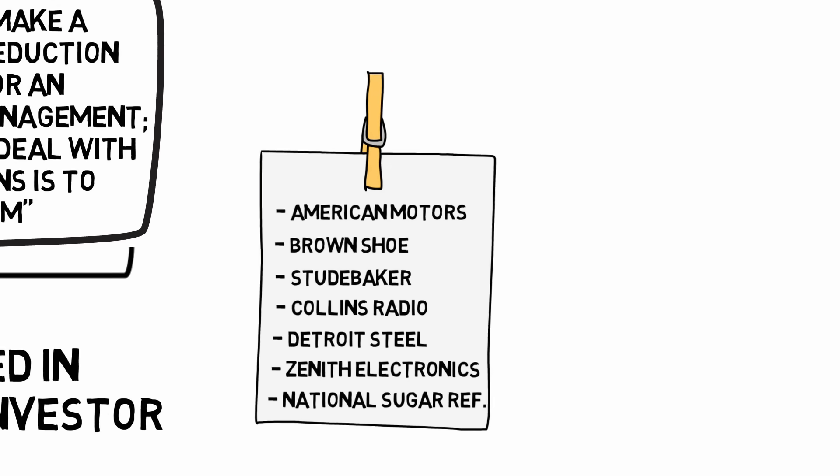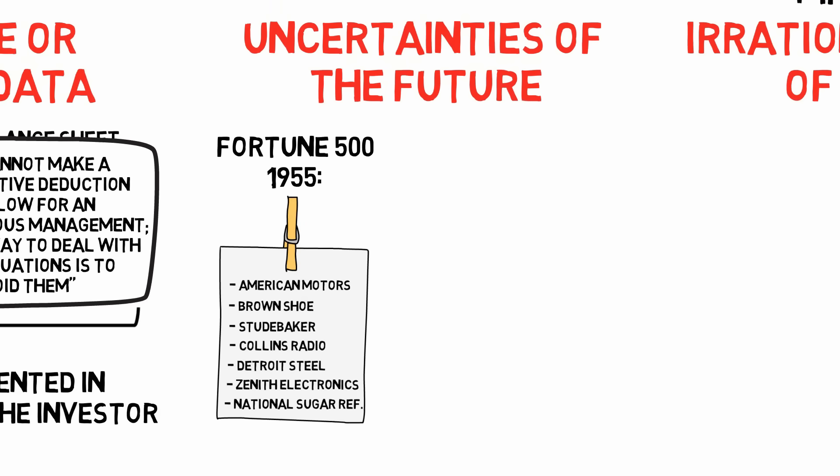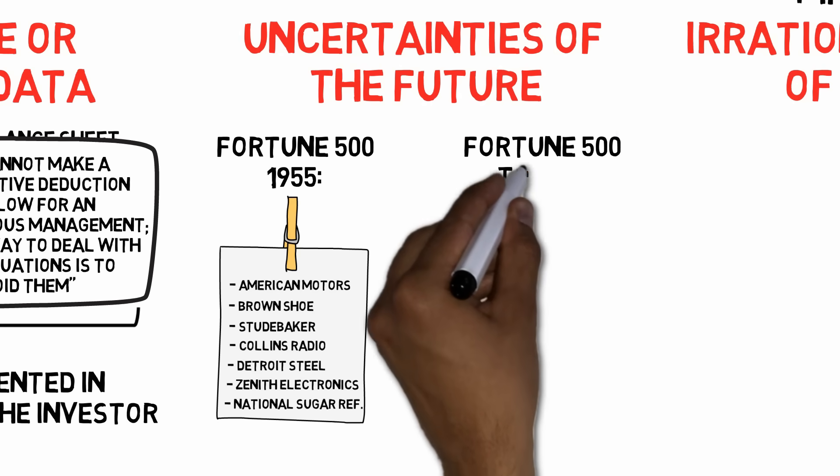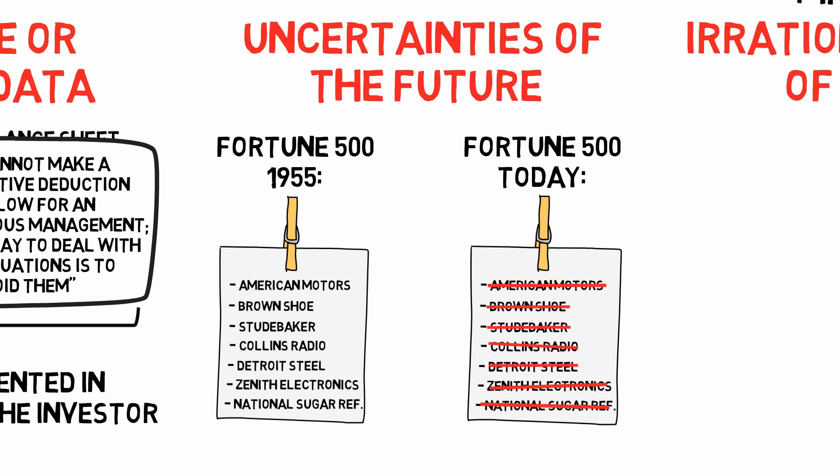If you said they were all Fortune 500 companies back in 1955, but are no longer on the list, well done! As a matter of fact, in 2014, 88% of companies on the Fortune 500 list from 1955 had been replaced. Either by going out of business, being surpassed by new companies, or by being acquired by other major players. These were some of the companies with the greatest profit margins, the greatest earning trends, with the best financial positions. But, in investing, the future is often no respecter of statistical data.